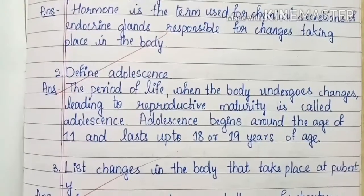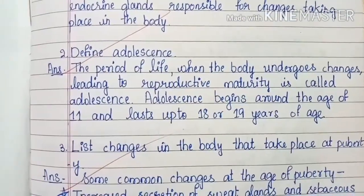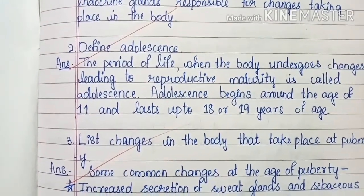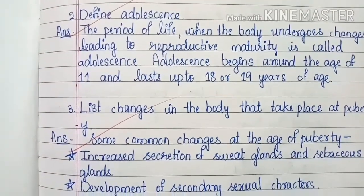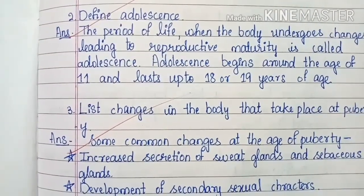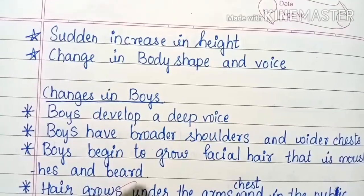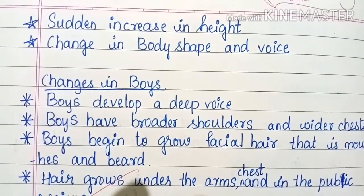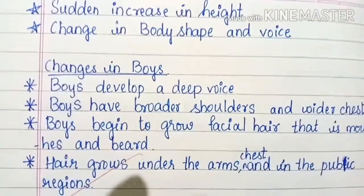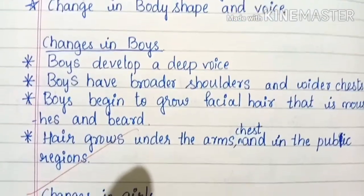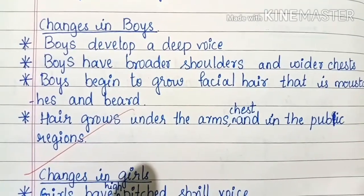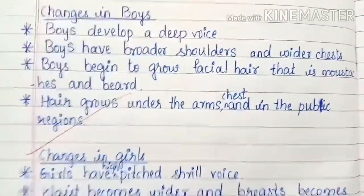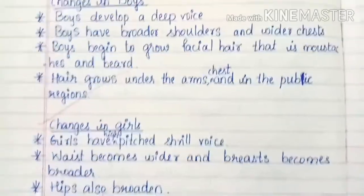List changes in the body that take place at puberty. Some common changes at puberty: increased secretion of sweat glands and sebaceous glands, development of secondary sexual characters, sudden increase in height, change in body shape and voice. Boys develop a deep voice, broad shoulders and wider chests, and begin to grow facial hair — moustaches and beard. Hair grows under the arms, chest, and in the pubic regions.